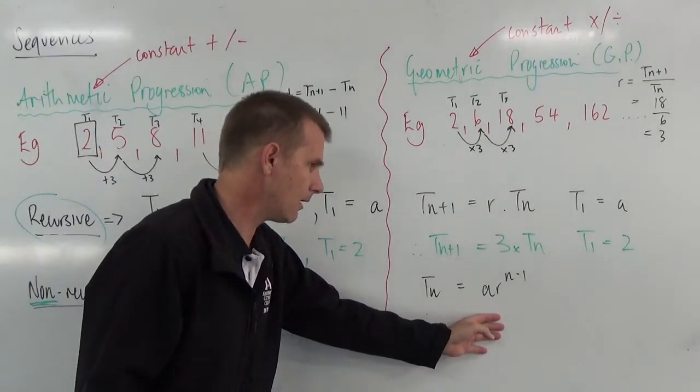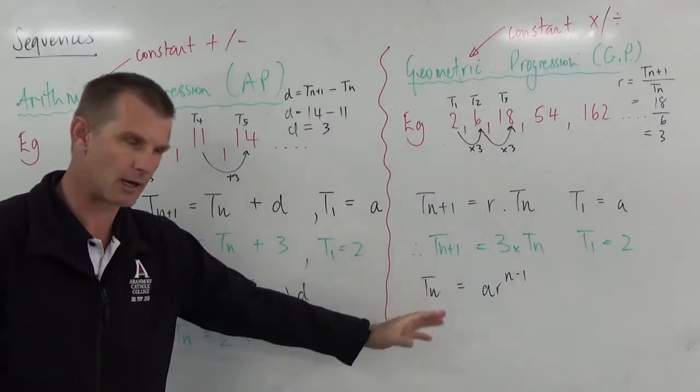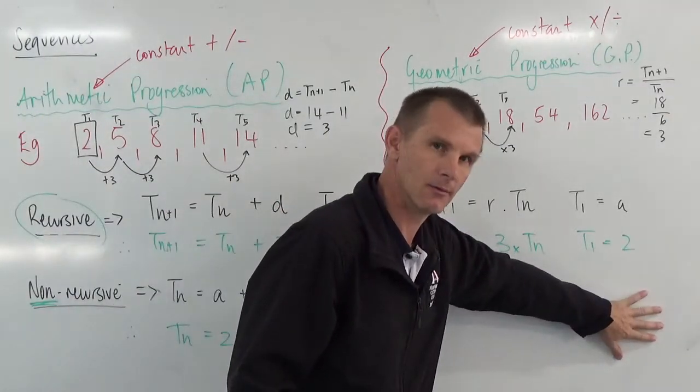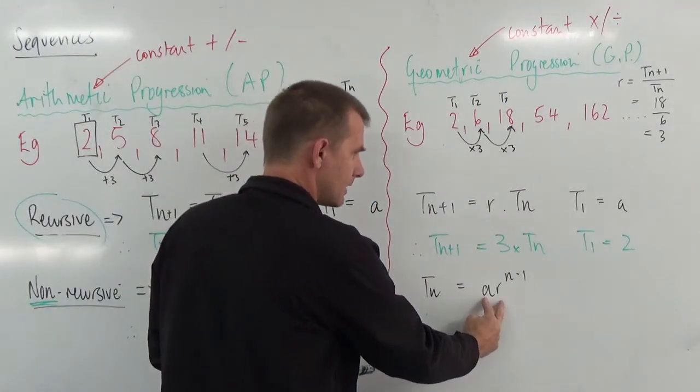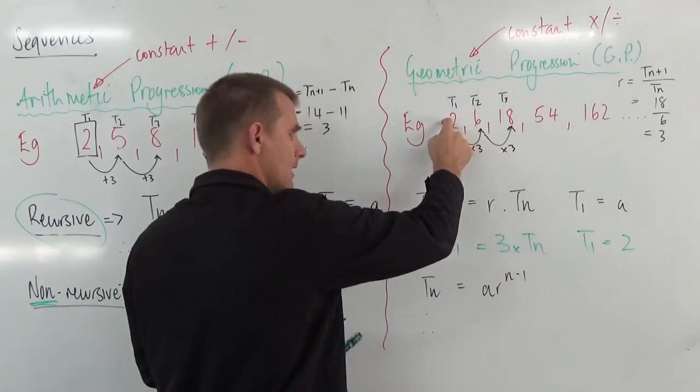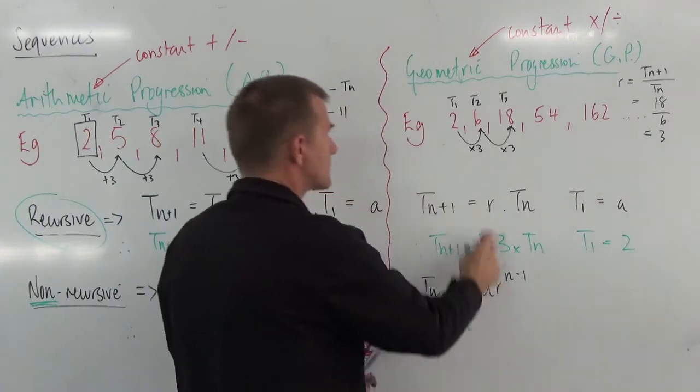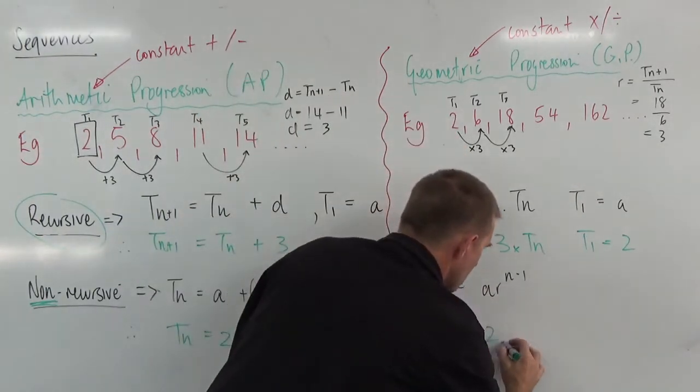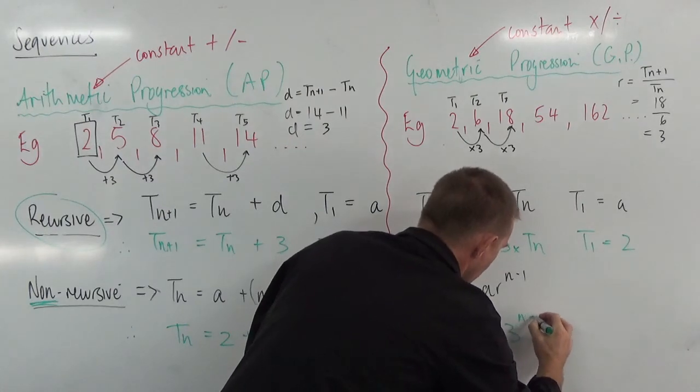Non-recursive formula, same as this guy over here, does not refer to a starting term. I don't need a starting term here. But what can I do? Well, the numbers are the same. Here's the A, here's the R. Well, I already have the R here and the A here. So, just drop them on in. T_n equals A, starting term, 2, times R, common ratio, to the power of n minus 1.